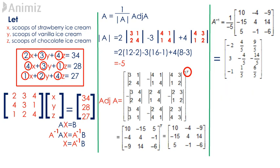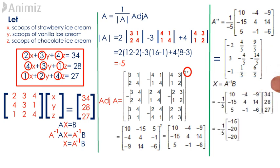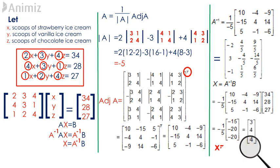Let's now find the values of X, Y, and Z by using the formula A inverse times B. The resulting matrix is of order 3 by 1. Multiplying A inverse with B gives us the matrix containing the elements 3, 4, 4. Therefore, X is equal to 3, Y is equal to 4, and Z is also equal to 4.